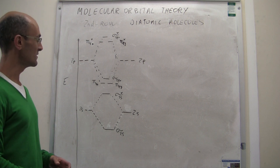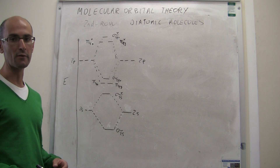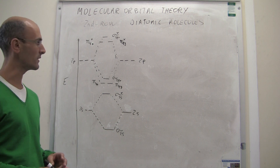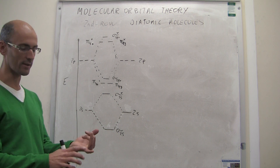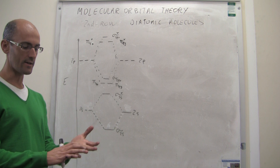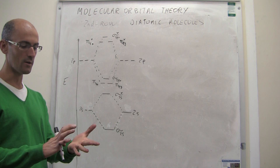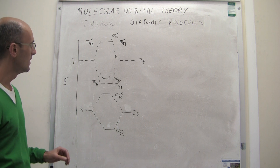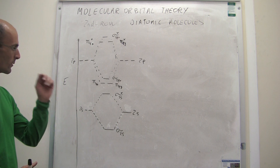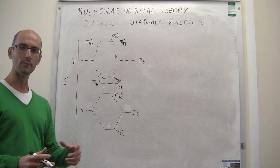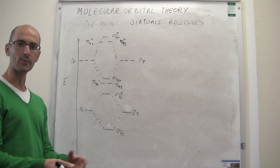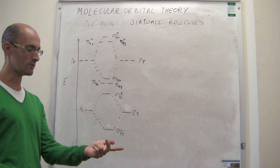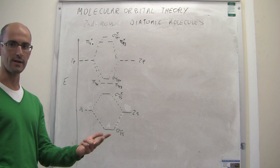We're going to wrap up the discussion of molecular orbital theory for the second row homonuclear diatomic molecules by taking a look at carbon 2, nitrogen 2, and then oxygen 2 and fluorine 2. This is the molecular orbital diagram that emerges from the combination of atomic orbitals for molecules like boron 2, carbon 2, and nitrogen 2.